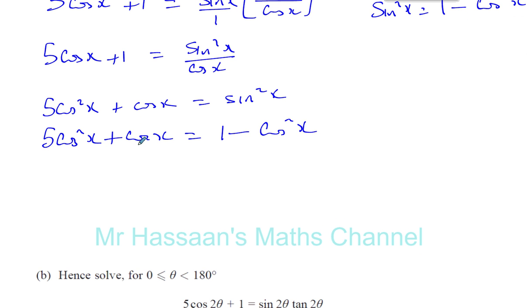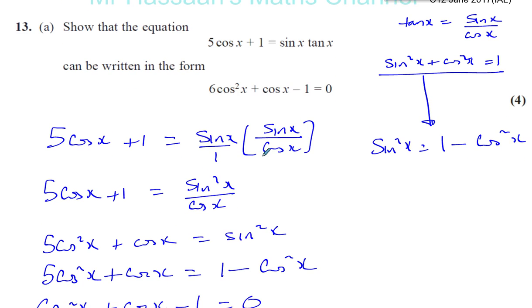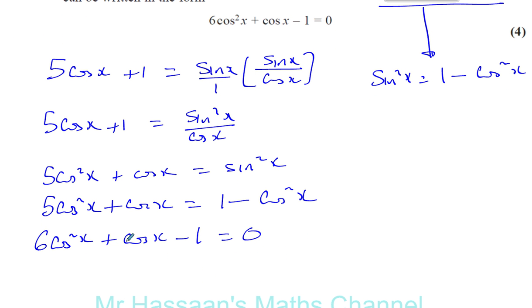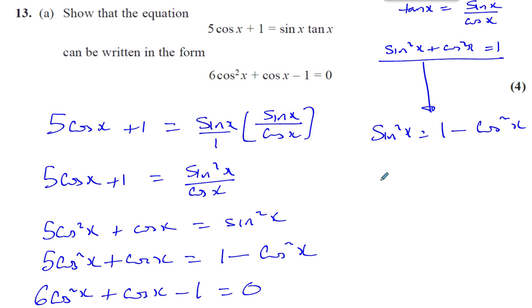All we need to do is to bring everything to one side. We can add cosine squared x to both sides, which in that case we'll get 6 cosine squared x plus 6 cosine x. And we can take away 1 from both sides. To get rid of this 1, you have minus 1, and that equals 0. And that I think is what we have to show. 6 cosine squared x plus cosine x minus 1 equals 0. So there's part A done.